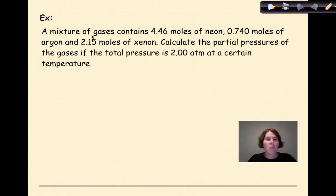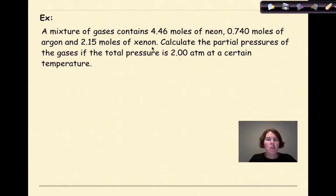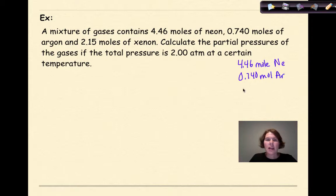A mixture of gases contains 4.46 moles of neon, 0.740 moles of argon, and 2.15 moles of xenon. Calculate the partial pressures of the gases if the total pressure is 2 atmospheres. First, we add all the moles together: 4.46 + 0.740 + 2.15 = 7.35 total moles.